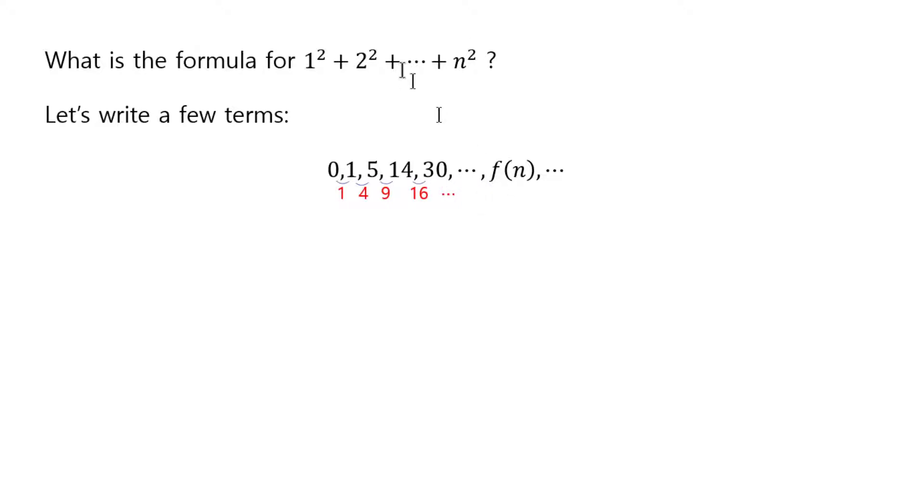Now, if we call this summation from 1 through nth term as f(n), then we can observe a pattern here, which is that always the next one is obtained by taking the previous one and adding the n squared,